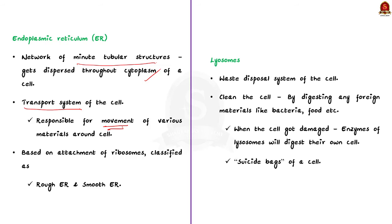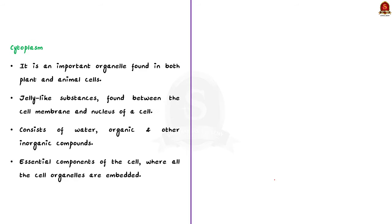Thirdly, about lysosomes — lysosomes are the waste disposal system of the cell. They help keep the cell clean by digesting foreign materials like bacteria or unwanted waste products. When there is a disturbance inside the cell's metabolism, for example when the cell gets damaged, the lysosomes release their enzymes and digest their own cell. So lysosomes act as suicide bags of the cell. Now finally, cytoplasm is present in both plant and animal cells — it is a jelly-like substance found between the cell membrane and the nucleus.